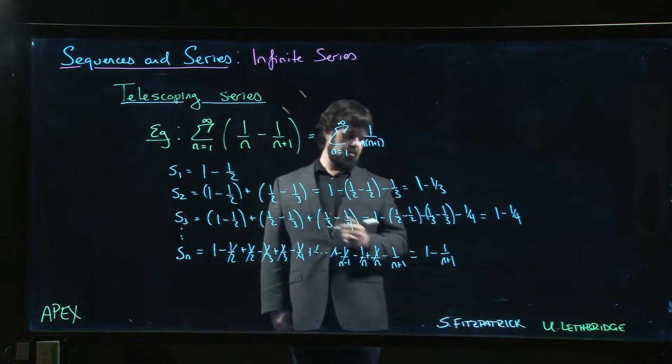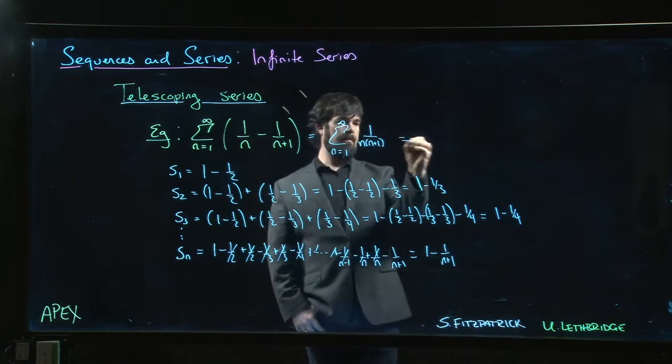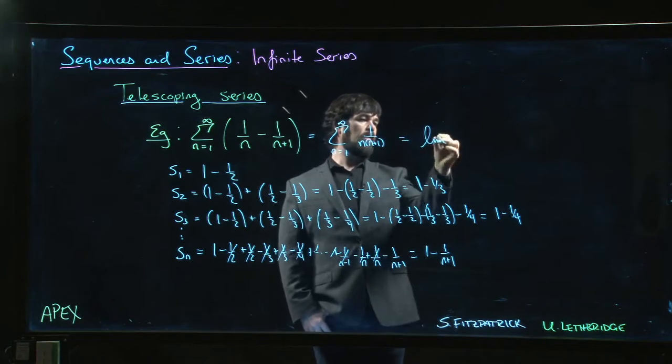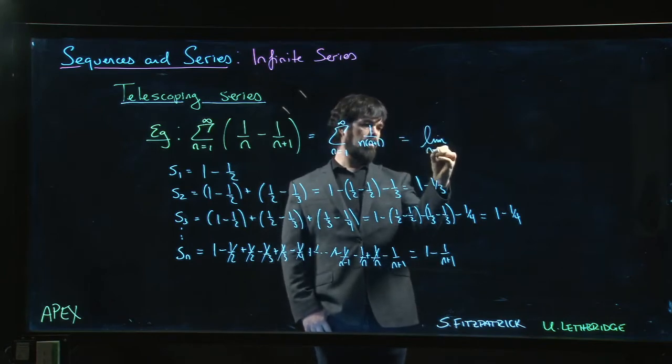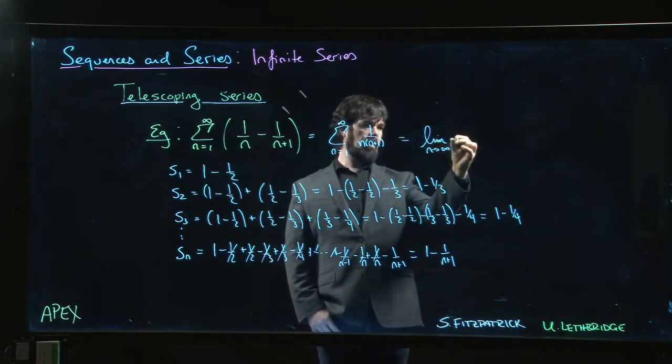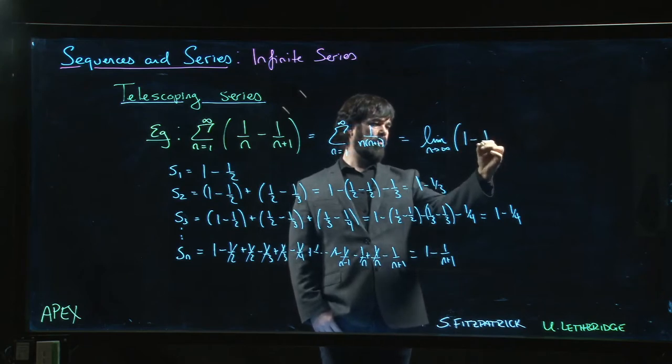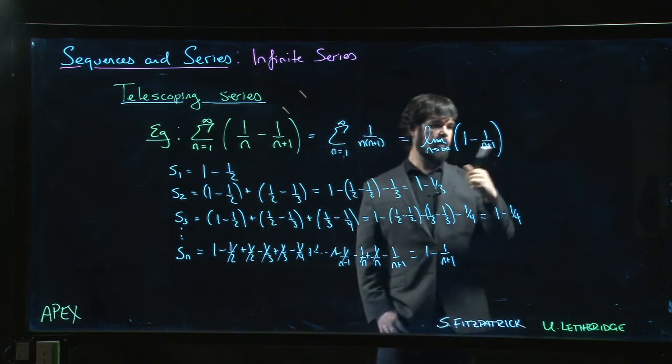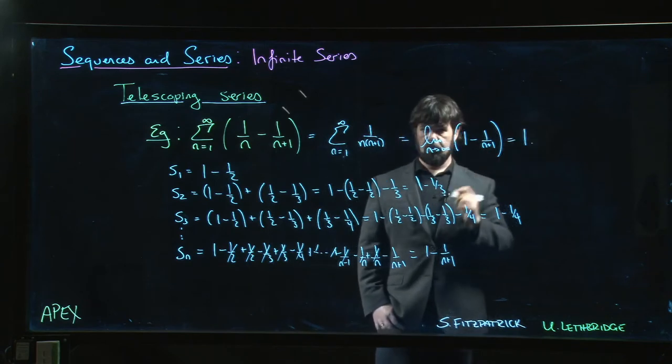Well, now we know what we get because we know that a series is just equal to the limit of the sequence of partial sums. So it's the limit n going to infinity of 1 minus 1 over n plus 1. That's going to go to 0, so we get a limit of 1.